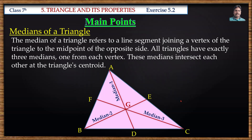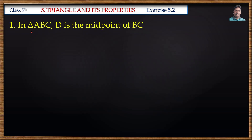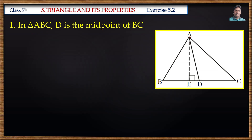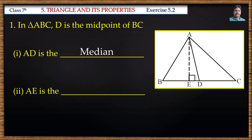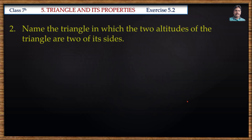First problem: In triangle ABC, D is the midpoint of BC. AE is a perpendicular distance drawn to BC from vertex A. Since D is the midpoint of side BC and A is a vertex, AD is called the median. AE is the perpendicular distance from side BC to vertex A, so AE is the altitude or height of this triangle.